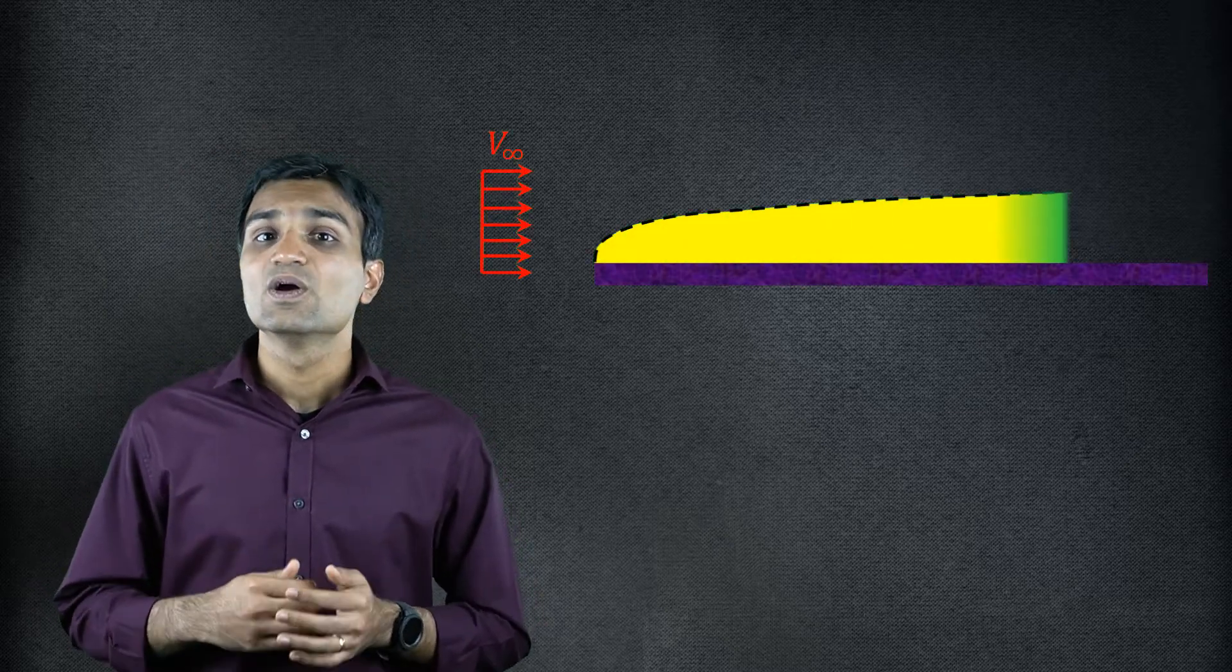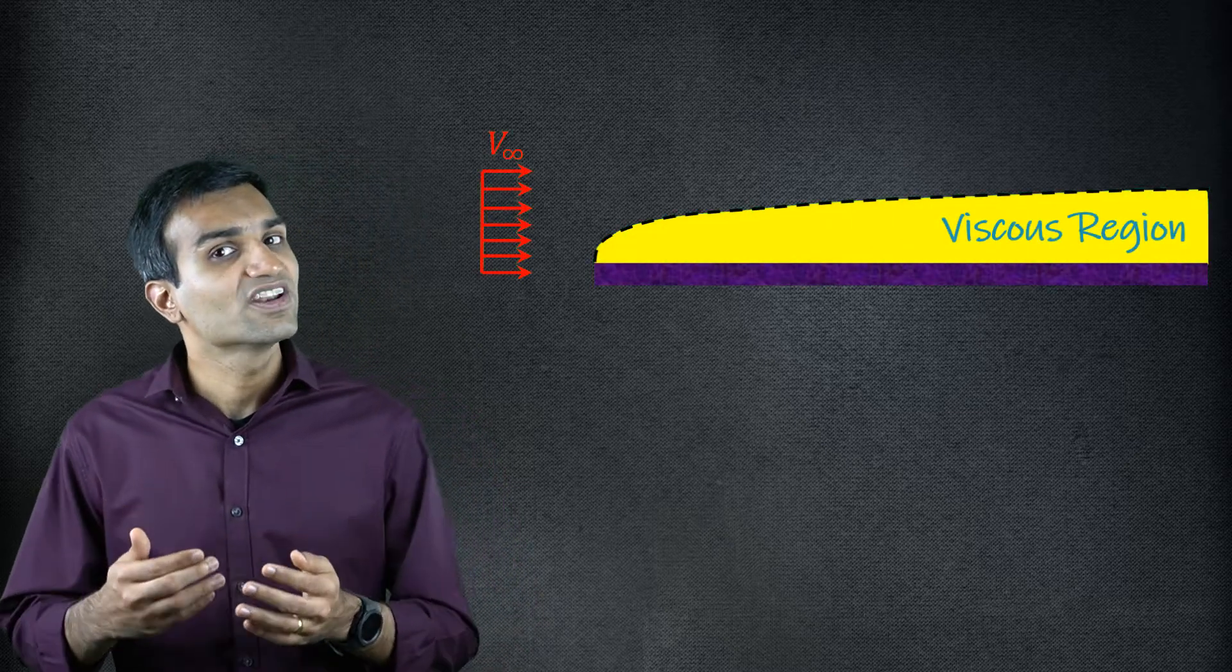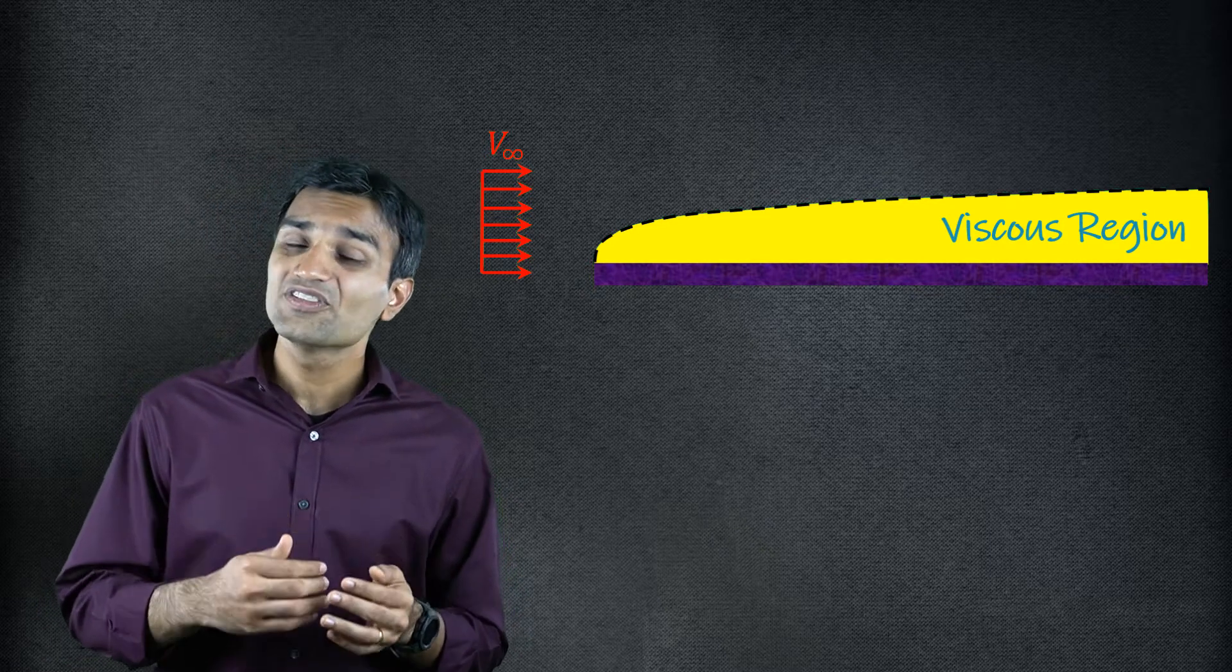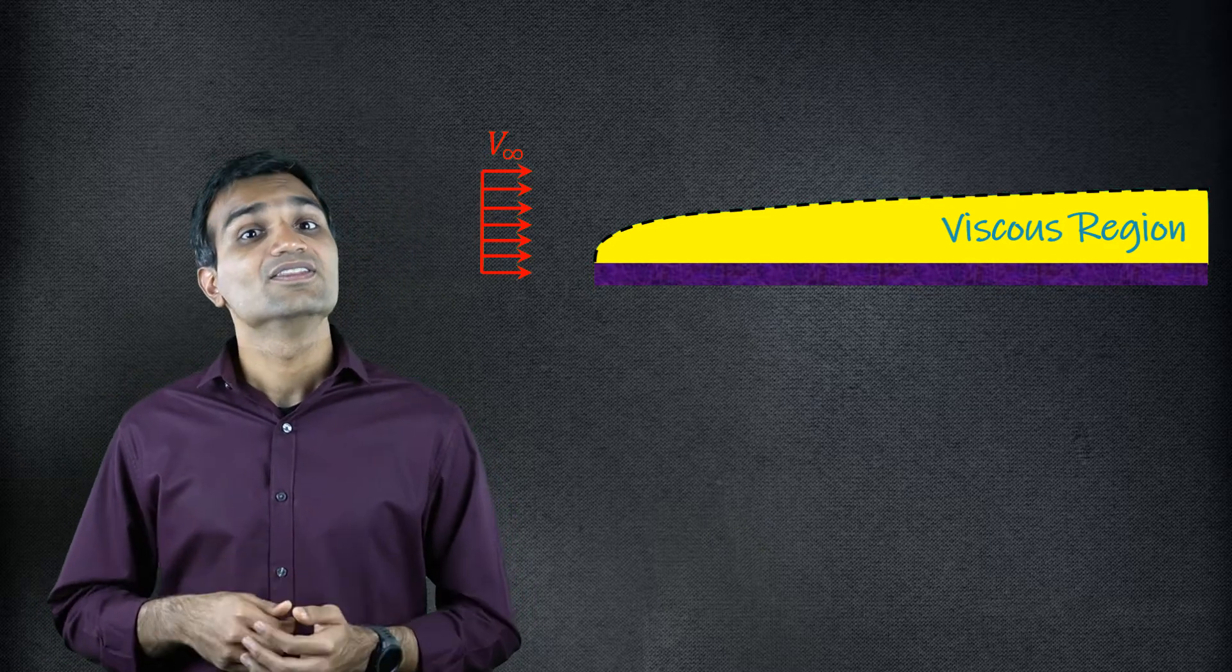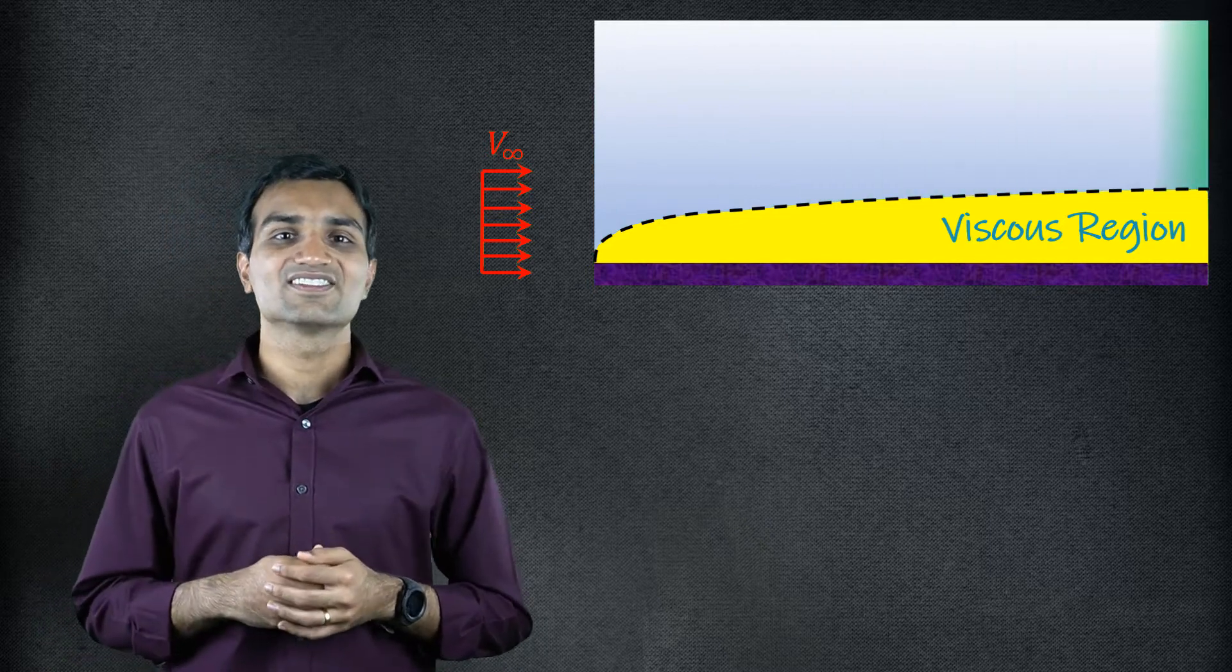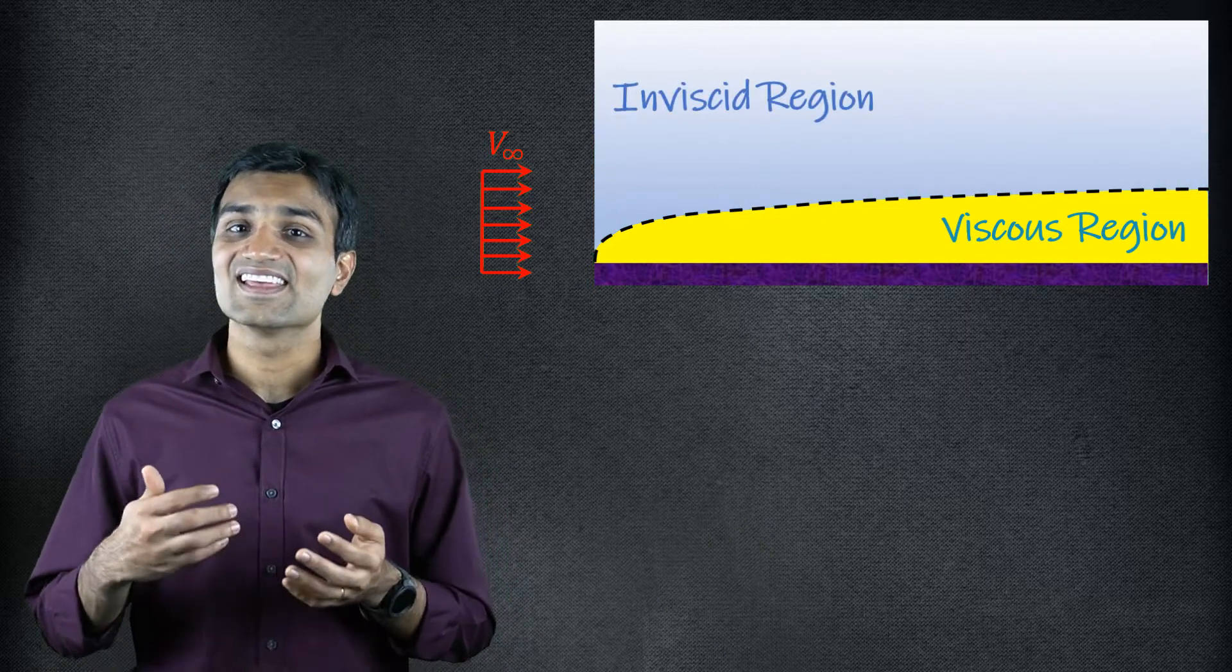Let us first understand why fluid flow separates. A thin viscous region called the boundary layer is created when a viscous fluid flows over a stationary solid. In most external flows, the flow outside this viscous region can be regarded as inviscid.